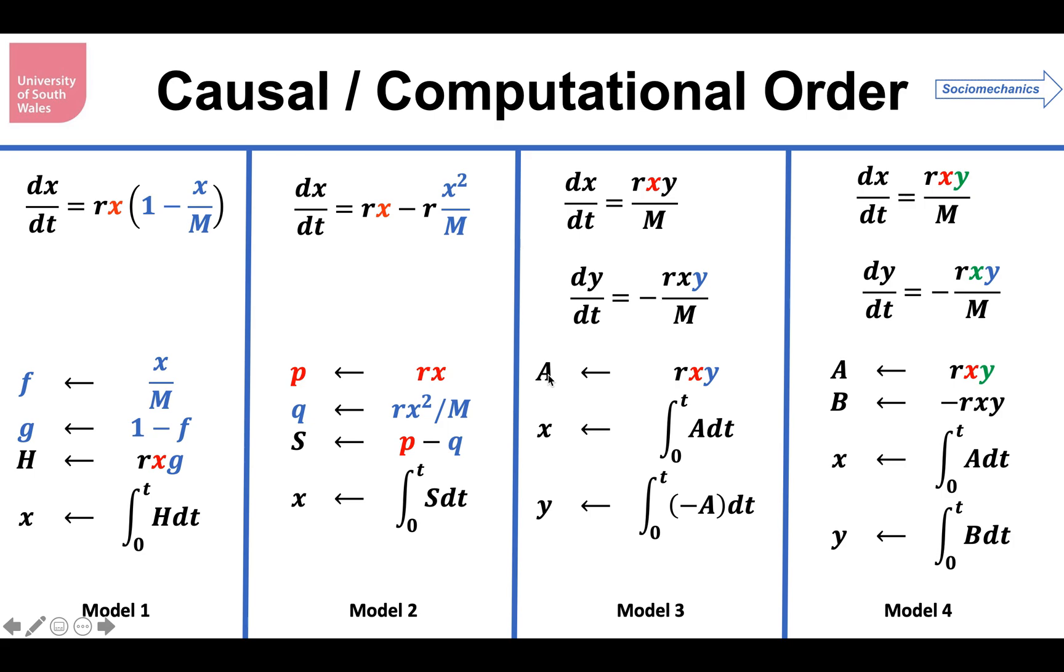In the third model, I would work out the common flow, a is equal to rxy. I would do the integration for x and I would do the integration for y. In the fourth model, I'd work out the flow into x independently to the flow out of y. And just looking at my slides there, the colors here should be green on x and blue on y. Then I would do the integral on a, and I would do the integral on b to obtain x and y. So it's computational order, because the stock flow models have different causal connections. So they are, to a system dynamicist, four different models.